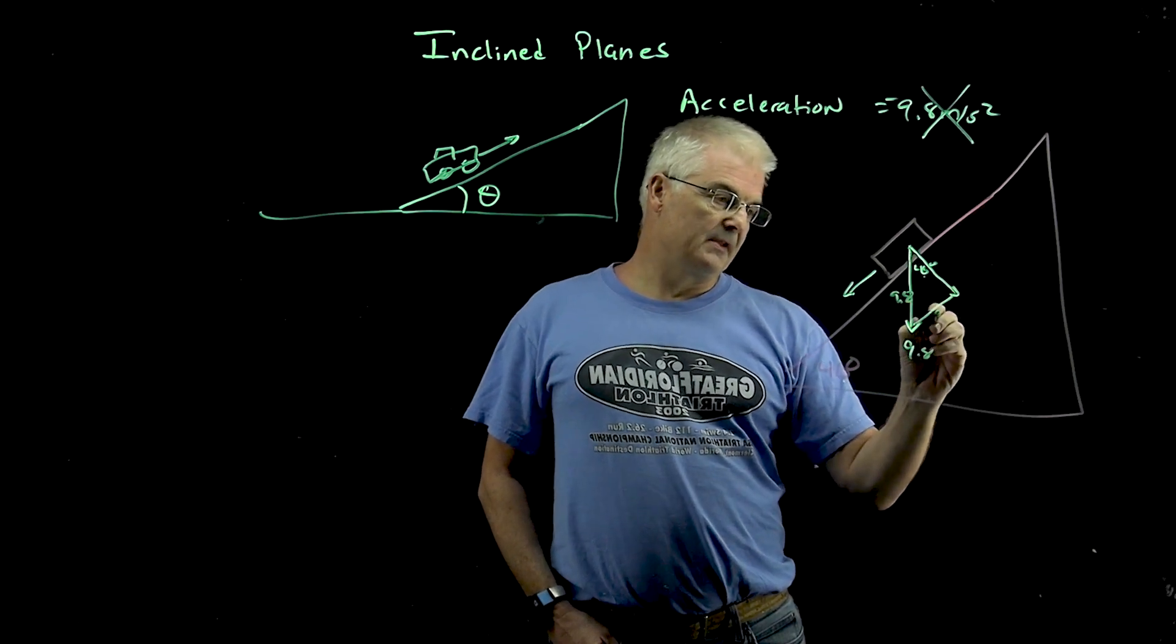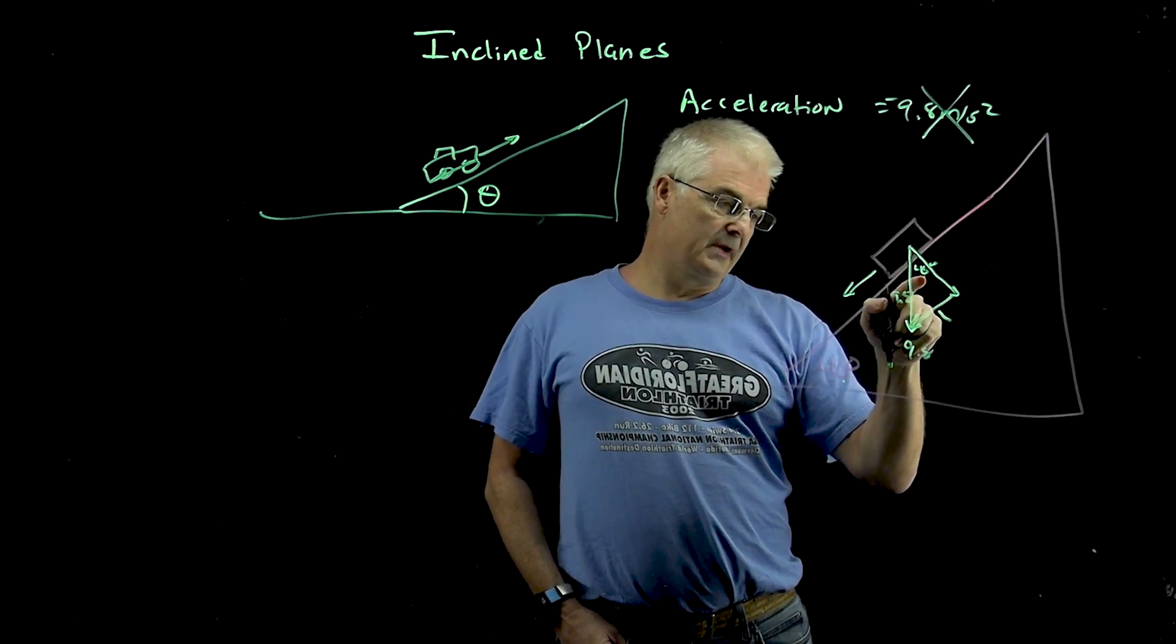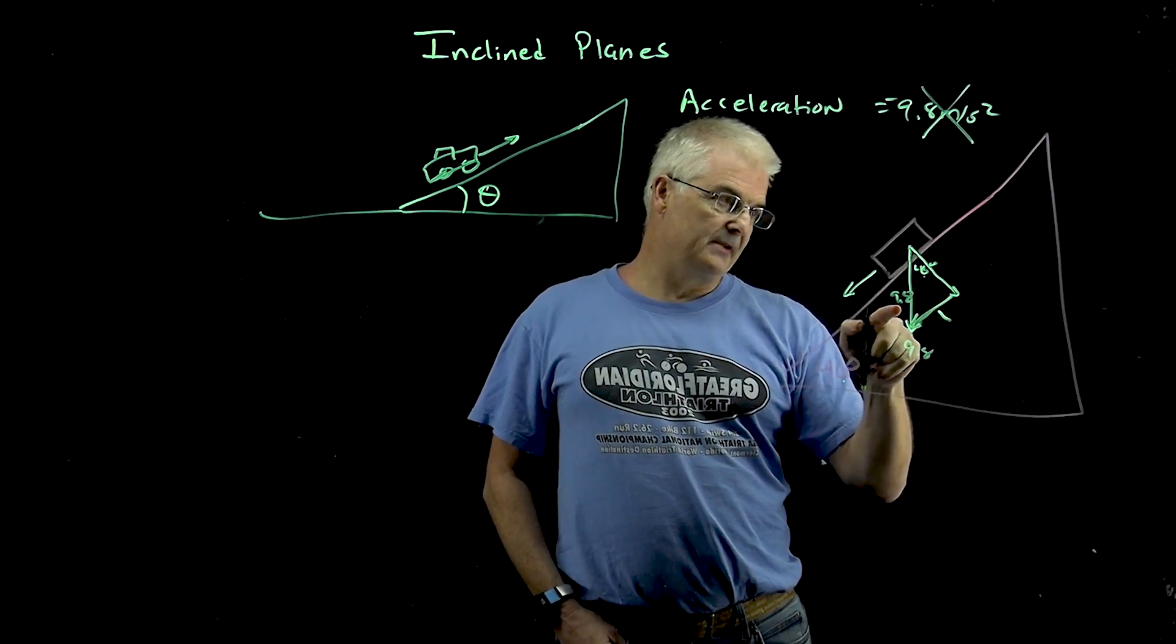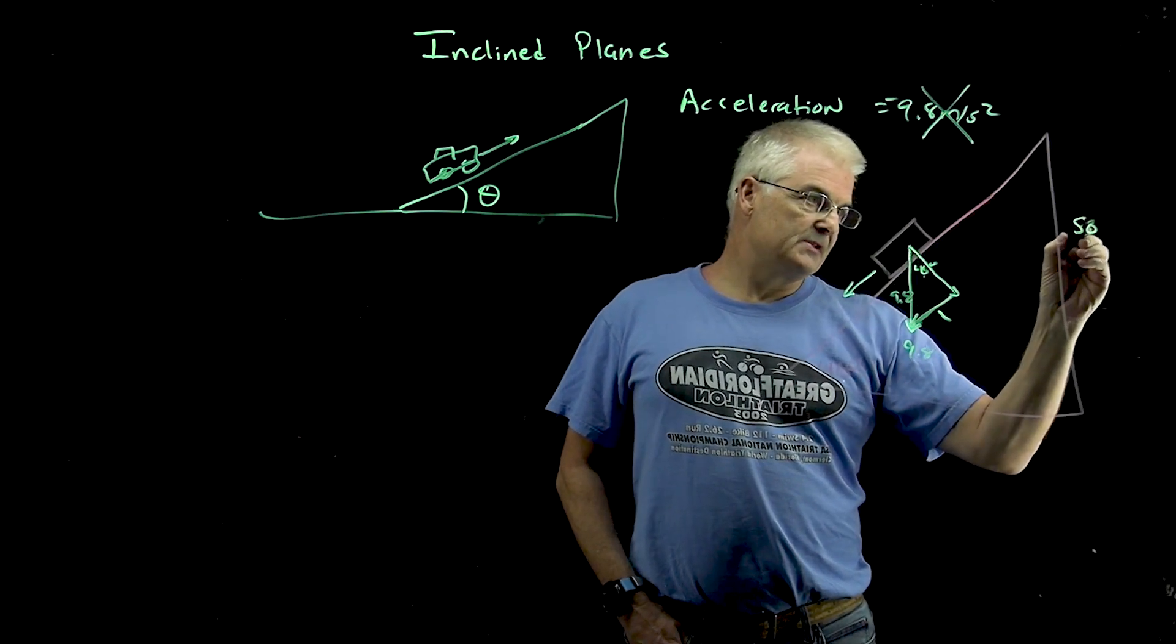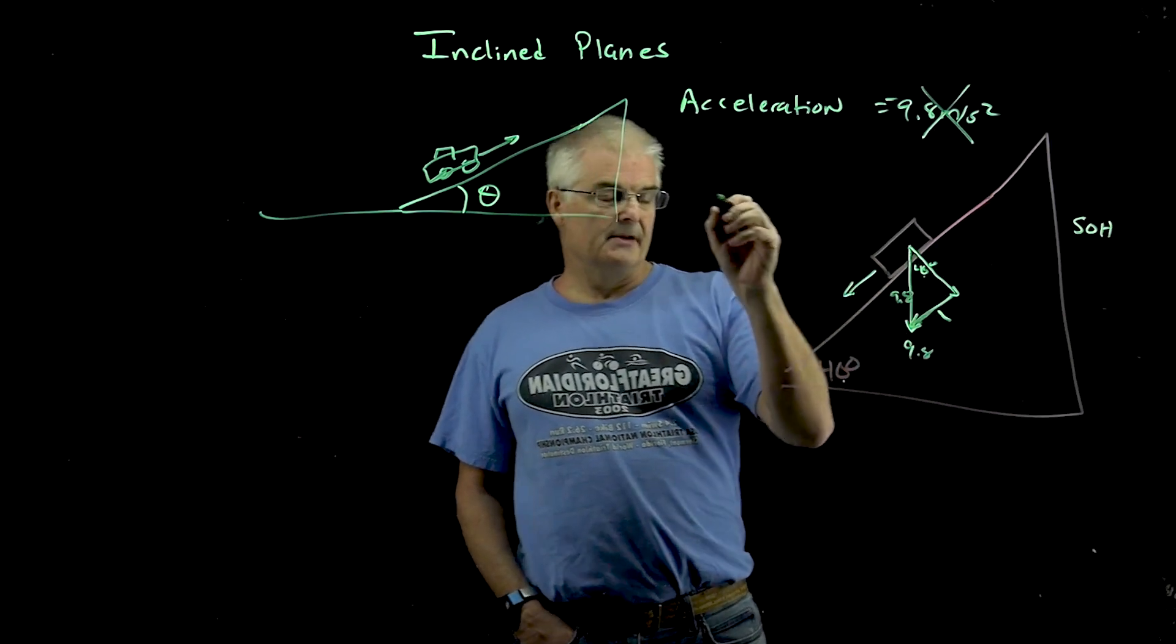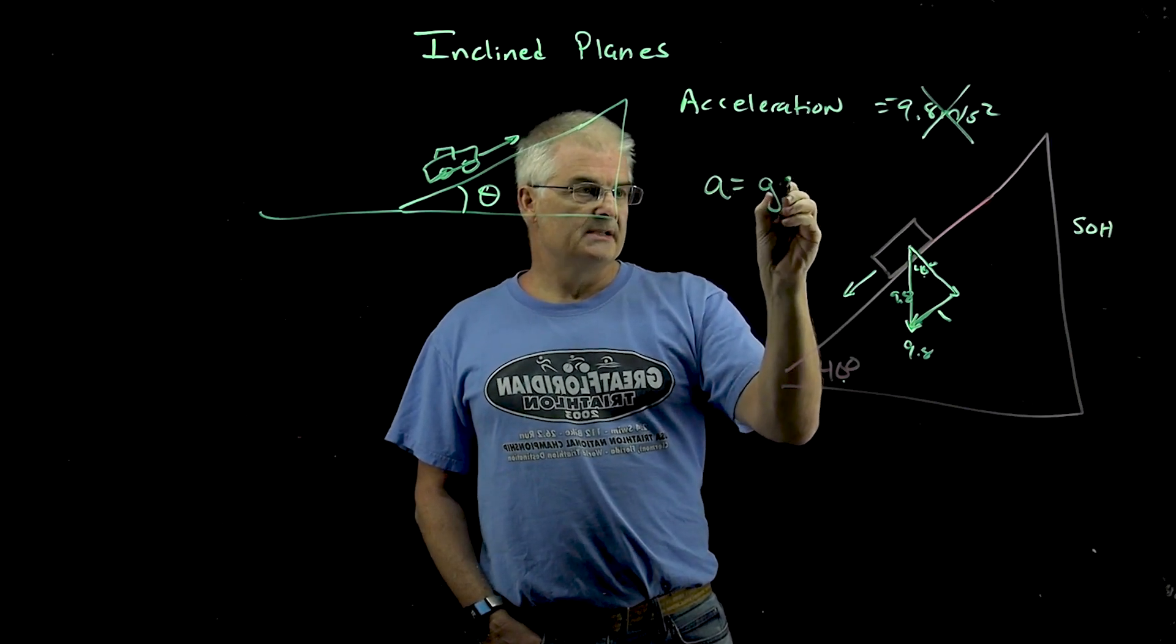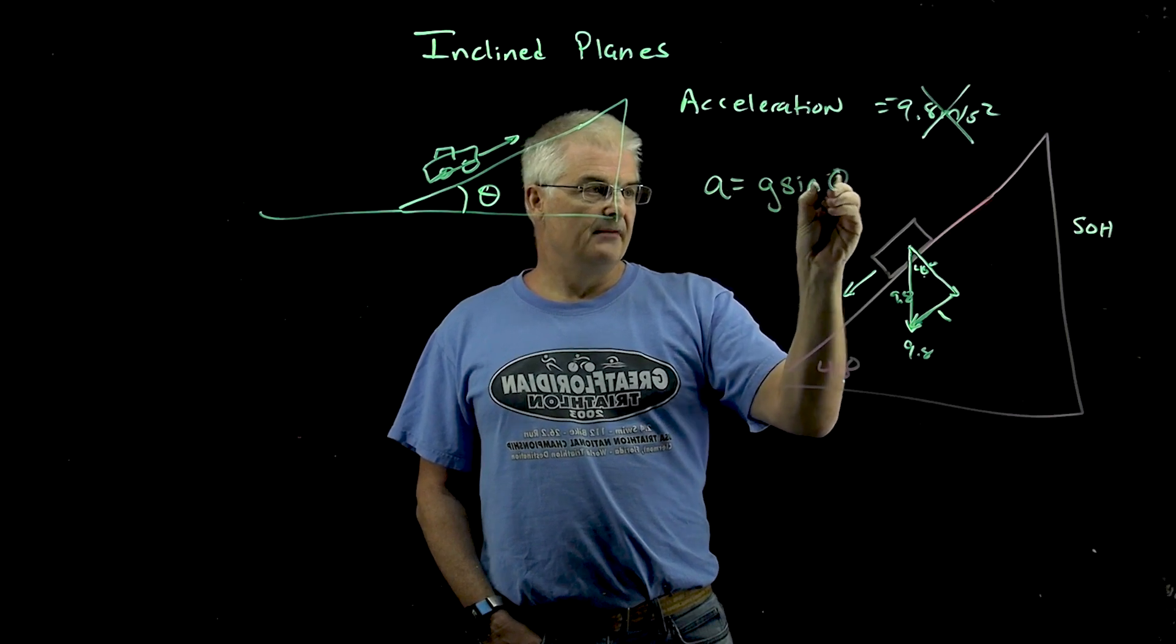And so the acceleration is this component here. And so since this is the 40, and this is the opposite and the hypotenuse, that's SOH CAH TOA. So it turns out the acceleration in an inclined plane, the acceleration is going to be g times the sine of theta.